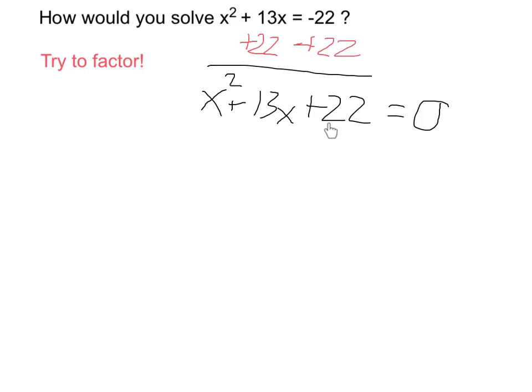So I want things that multiply and give me 22, and add and give me 13. Well, right away, I see that 22 is equal to 2 times 11, and conveniently, 2 plus 11 is equal to 13.